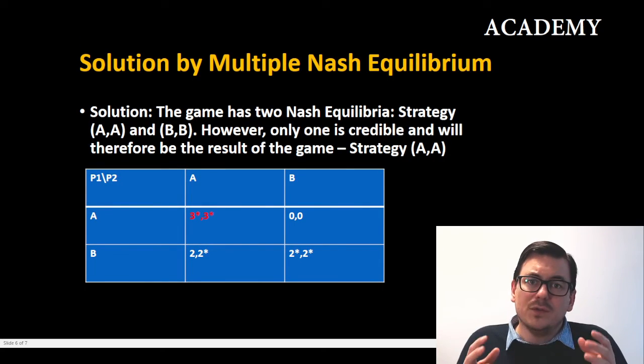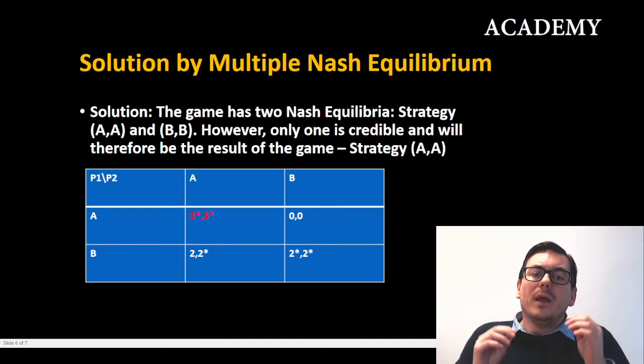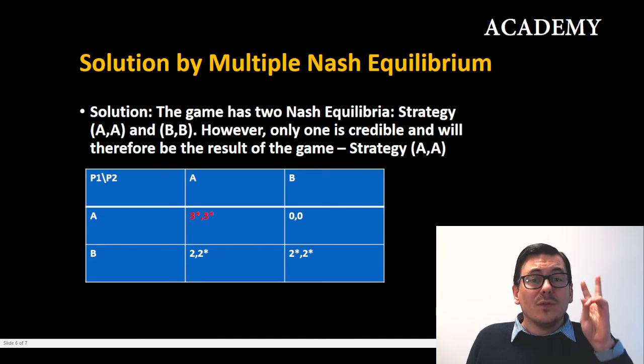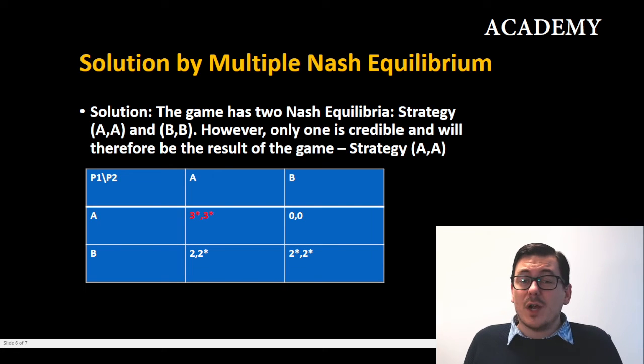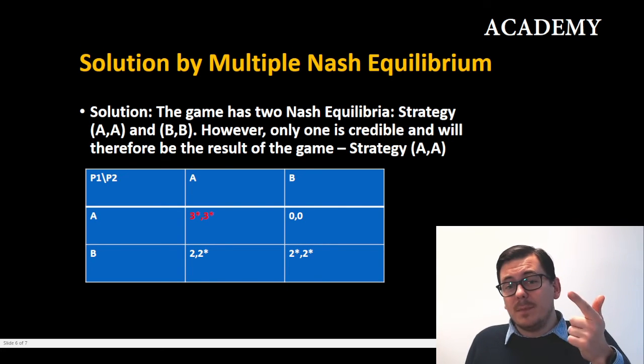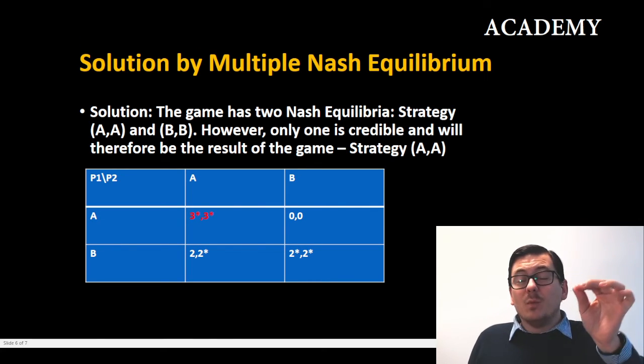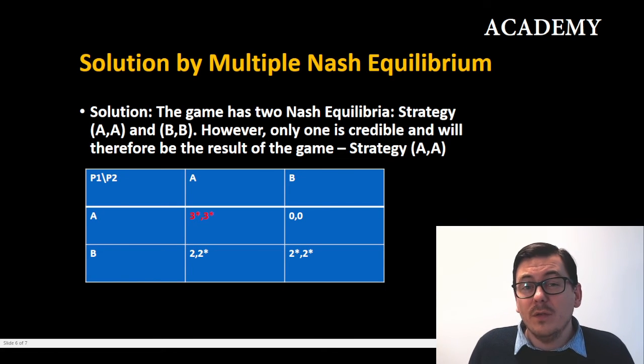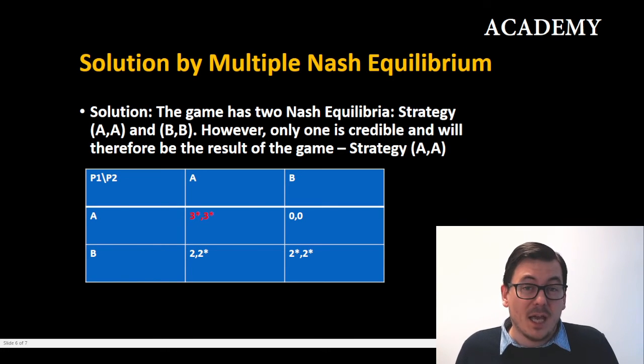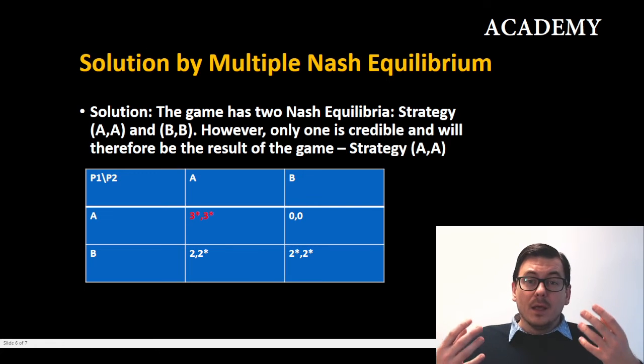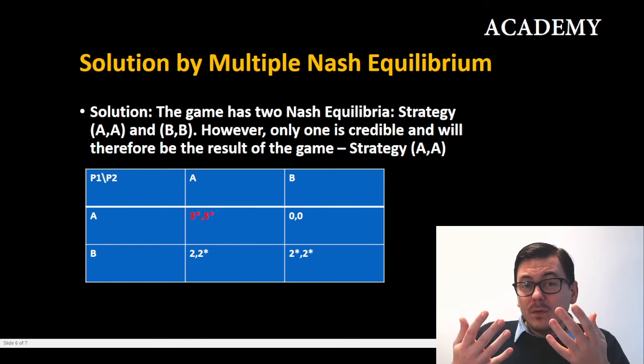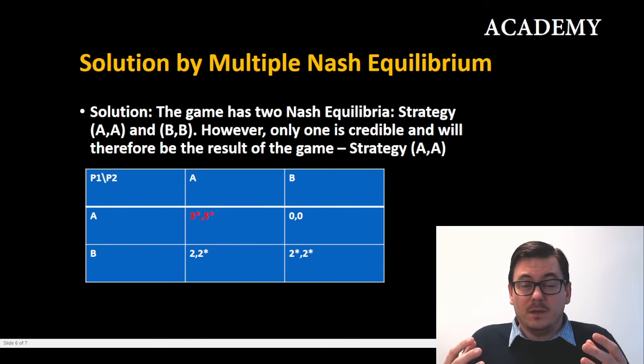So the solution to this game with multiple Nash equilibrium is that the game has two Nash equilibria: strategy (A,A) and strategy (B,B). However, only one is credible when we play the game, and that would therefore be the actual result of the game, and that is strategy (A,A). So here we solve the game first by finding the Nash equilibria and then we analyze our Nash equilibria looking at credibility.